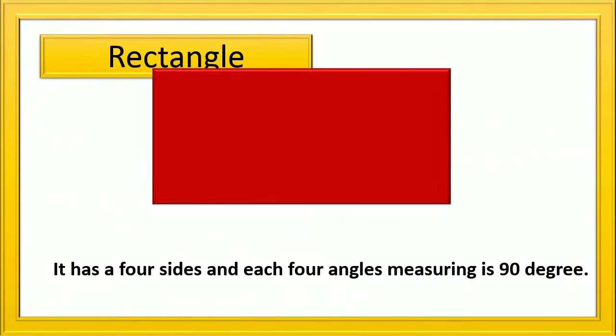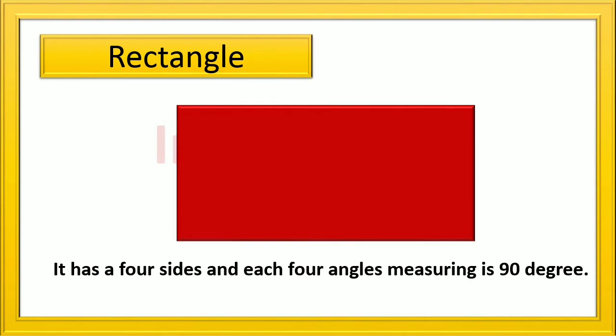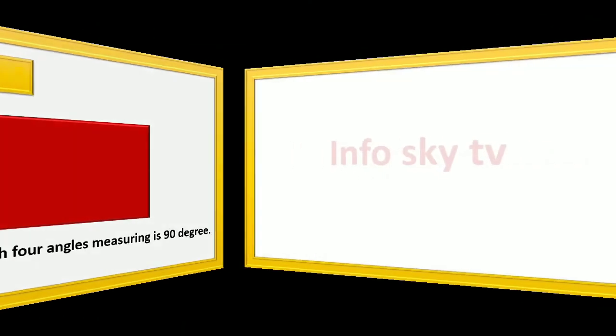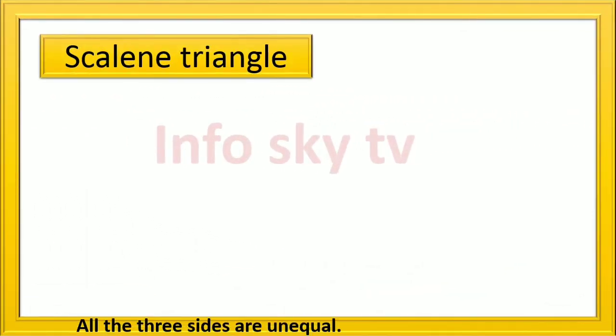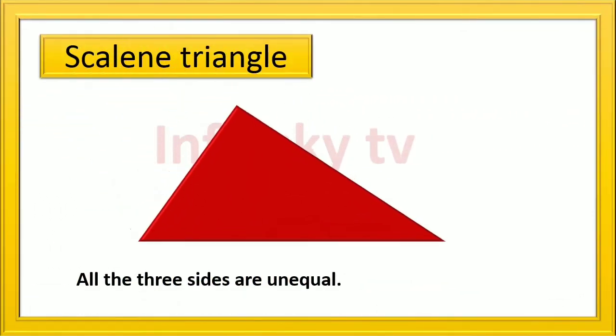Rectangle: it has 4 sides and each 4 angle measuring is 90 degree. Scalene Triangle: all the 3 sides are unequal.